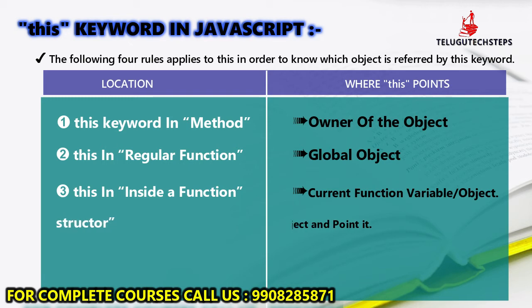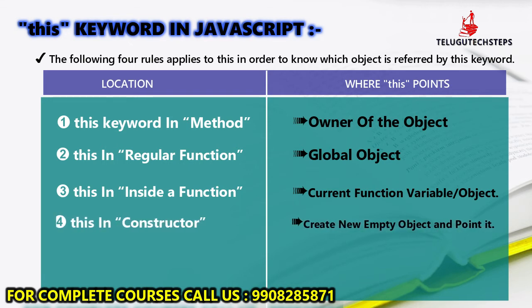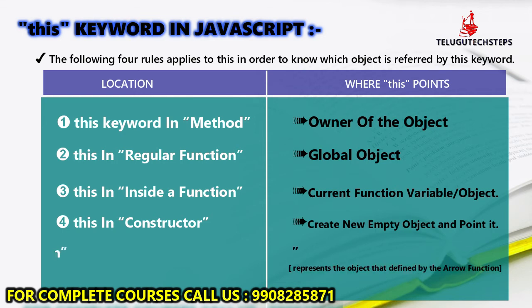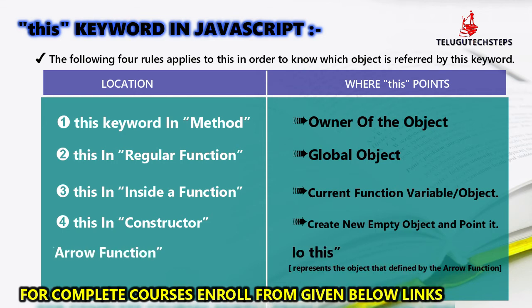And next, coming to 'this' in the constructor. For example, you can use the 'this' keyword in the constructor — it will create a new object. That is the fourth point.